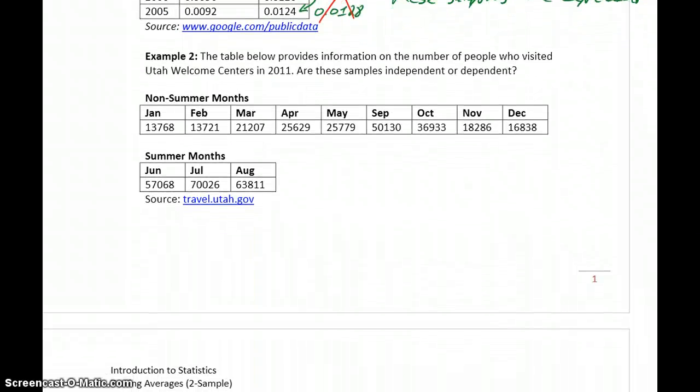In example two, we have information on the number of people who visited welcome centers in Utah in 2011. The question again is, are these samples independent or dependent?